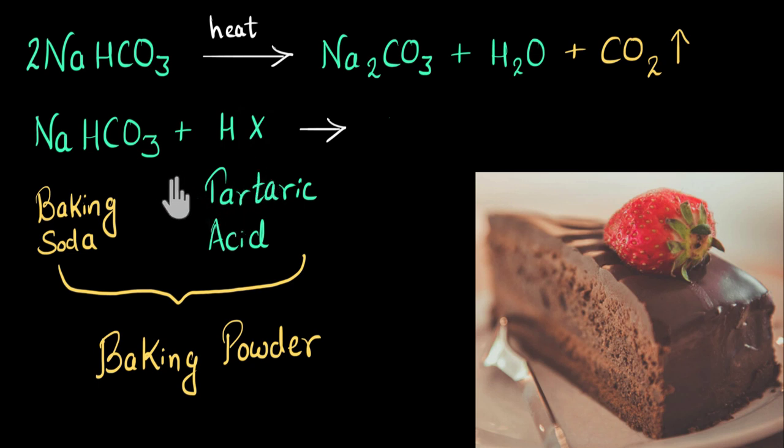So let's do that. Over here, we will get a double displacement reaction and the ions are going to exchange position. Now sodium plus ion will get attracted to X minus ion, whatever the X was. And we will get NaX. This will be a salt. And our H plus will now get attracted to HCO3 minus. We will get H2CO3.